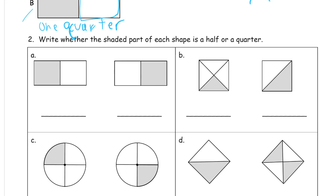Write whether the shaded part of each shape is a half or a quarter. Okay, so this is a half. And there's half and there's quarter.